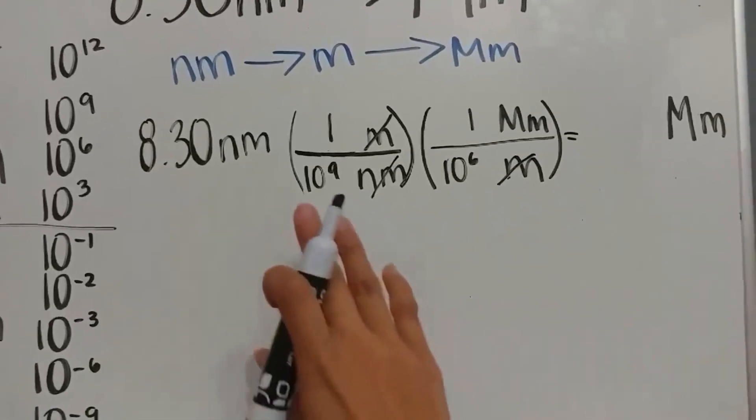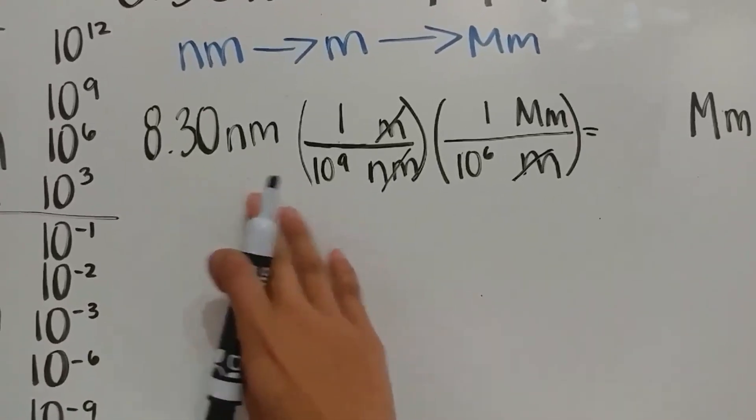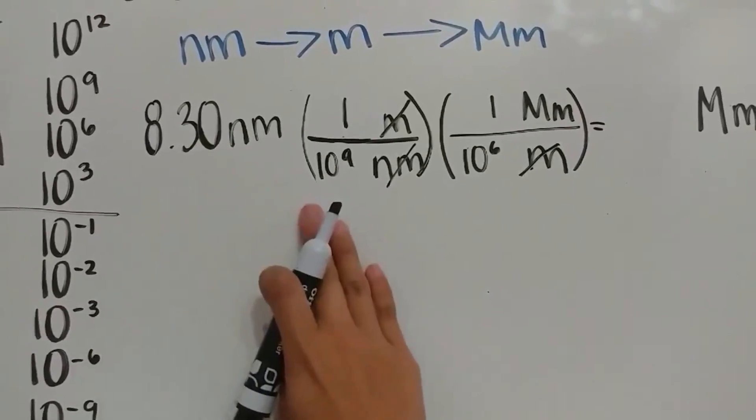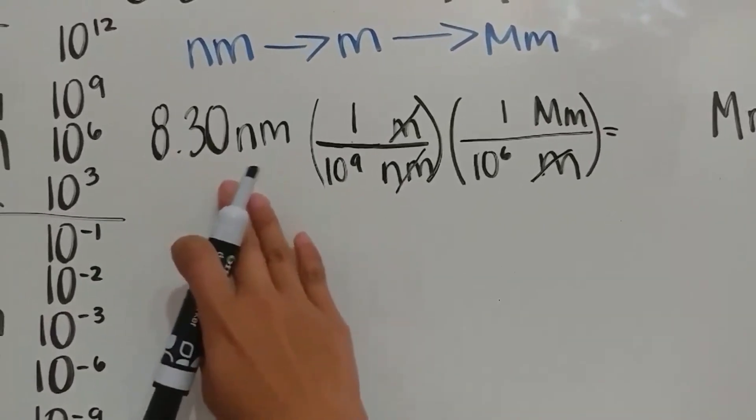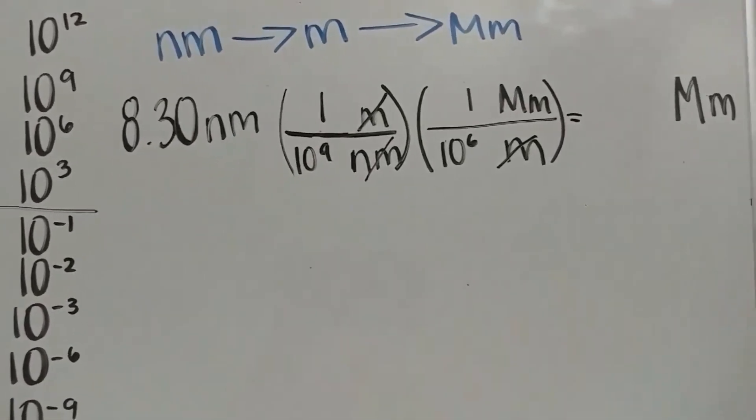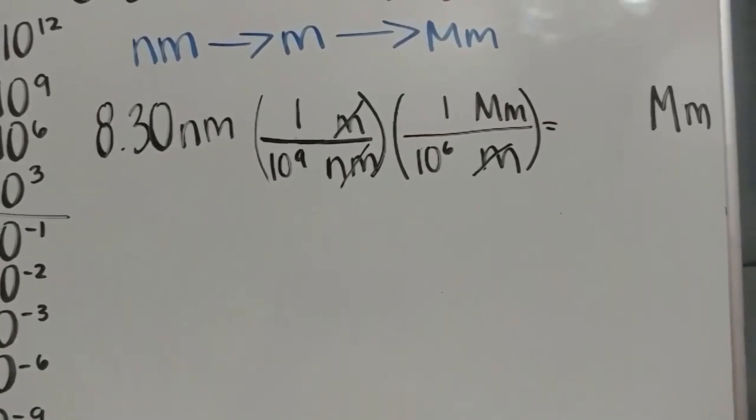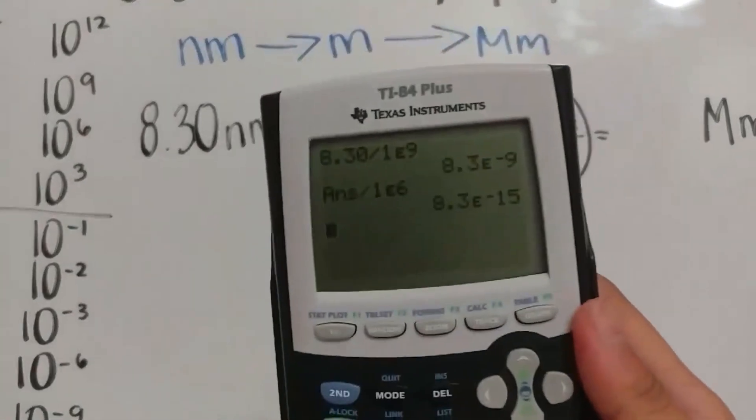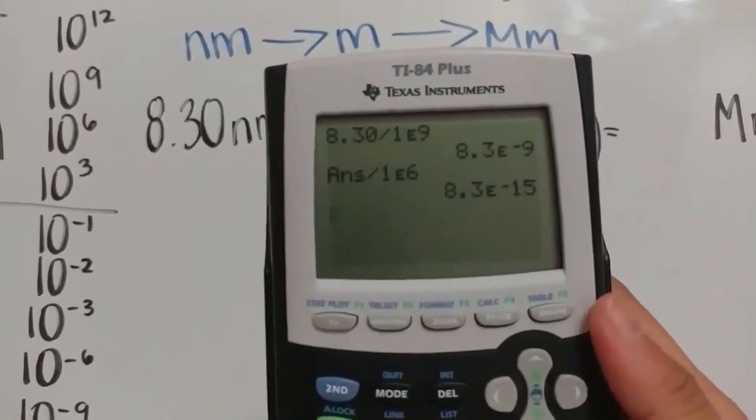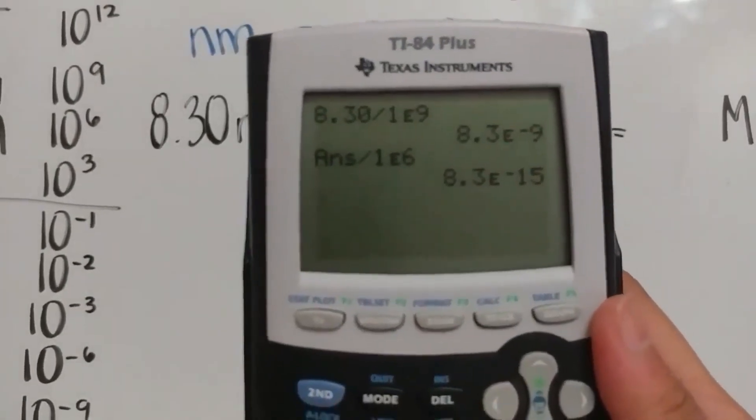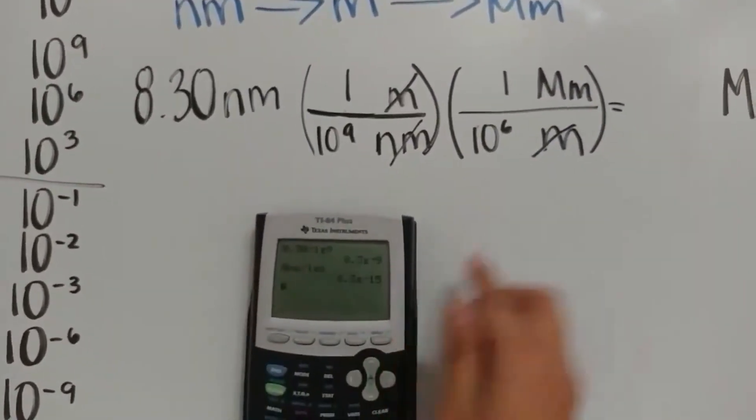So, after you input in your values, you divide 8.30 by 10 to the 9th, and then divide that answer by 10 to the 6th in your calculator. As you can see here, we have done that, and our answer would be 8.3 times 10 to the negative 15.